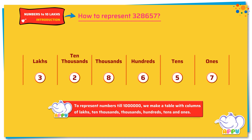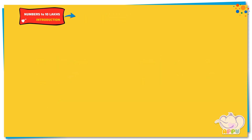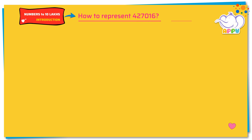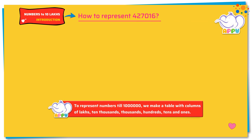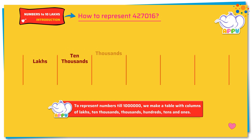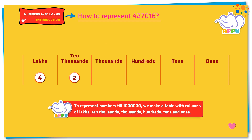Let's see another example. How to represent 4-2-7-0-1-6. To represent a six-digit number, we make a table of lakhs, 10 thousands, thousands, hundreds, tens, and ones. So, four-two-seven-zero-one-six can be represented as four lakhs, two ten-thousands, seven thousands, zero hundreds, one tens, and six ones.